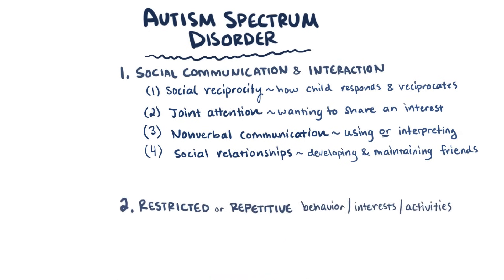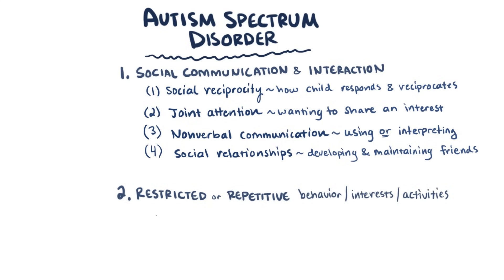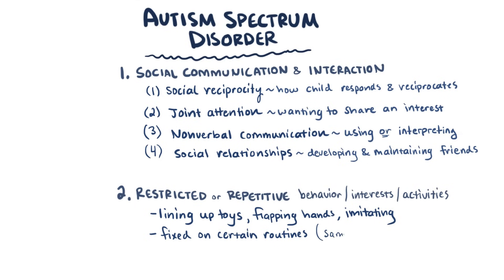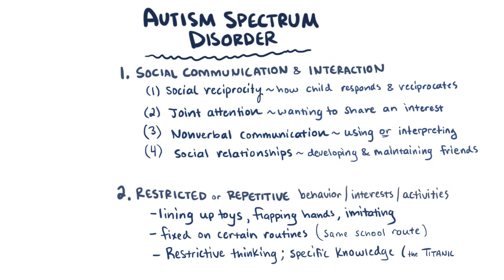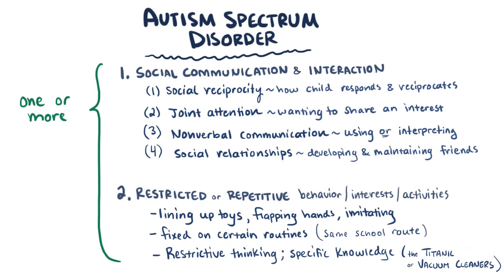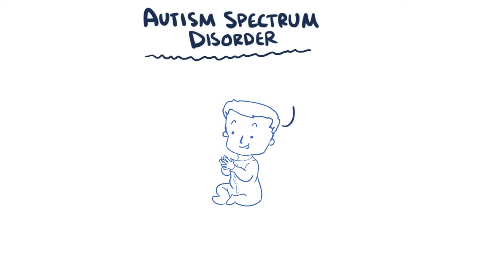The other major area is called restrictive and repetitive behaviors, and this category is pretty broad and can include a whole bunch of behaviors, some being more well known or characterized than others, like lining up toys in a ritualistic sort of way, or flapping one's hands, or imitating words or phrases. The child might be fixed on certain routines, like taking the same route every day to school, or they might have restricted patterns of interest, like having a very specific and in-depth knowledge of the Titanic or vacuum cleaners. Children with autism spectrum disorder might exhibit one or more of these deficits and vary in how severe the deficit is.